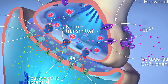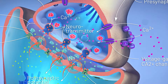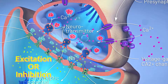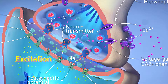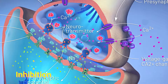When that happens, the effect on the next cell is determined by whether the released neurotransmitter is an excitatory or inhibitory neurotransmitter. If it's excitatory, it's going to bring that second cell closer to depolarization, making it more likely that an electrical impulse will start down that second cell. If it's inhibitory, it's going to make that depolarization less likely to occur.